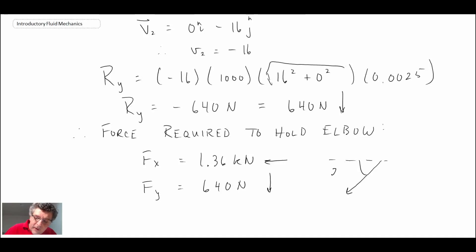And we can then resolve that vector. The angle would be 25.2 degrees, and the magnitude is 1,503 newtons or 1.5 kilonewtons. So that is the solution to the problem of the reducing elbow.